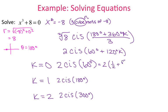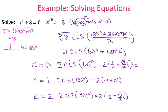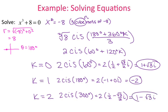Now I simplify each expression. Cosine of 60 is 1 half and sine of 60 is root 3 over 2. Cosine of 180 is negative 1 and sine of 180 is 0. Cosine of 300 is 1 half and sine of 300 is negative root 3 over 2. Distributing the 2 — since the fractions are over 2, they cancel for the first and third. For the second, 2 times negative 1 gives negative 2. The three cube roots of negative 8 are: 1 plus root 3i, negative 2, and 1 minus root 3i.